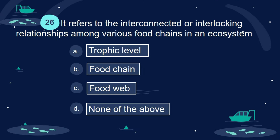Question 26. It refers to the interconnected or interlocking relationships among various food chains in an ecosystem. A. Trophic level. B. Food chain. C. Food web. D. None of the above.